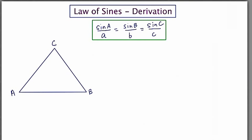This video is on the derivation of the law of sines. The law of sines is a formula used to find missing sides or angles of any triangle. The formula is sin A over a equals sin B over b equals sin C over c.